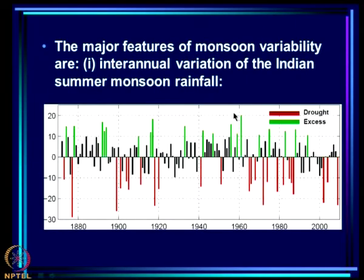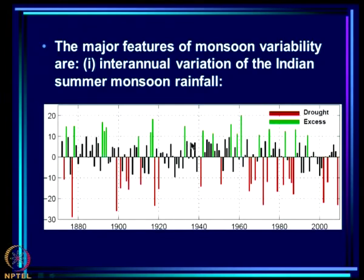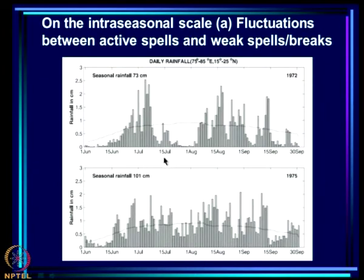The major features of monsoon variability are inter-annual variation of the Indian summer monsoon rainfall. We have a great deal of data from 1876 till present, and this is the nature of inter-annual variability with droughts and excess monsoon years occurring with differing frequencies in the decades. This is a major feature of monsoon variability that we have looked at on the inter-annual scale.